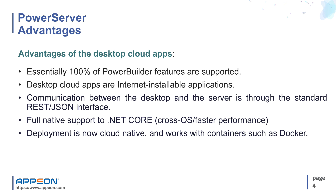.NET Core is now supported, changing the landscape for .NET in three major ways. Number one, it supports cross-OS, for example Linux servers. Number two, server-side performance is faster. And number three, Microsoft redesigned it from the ground up to be cloud deployable, including Docker compatibility and side-by-side versioning. The product deployment, including the license activation mechanism, has been revised for cloud compatibility and works with containers such as Docker.